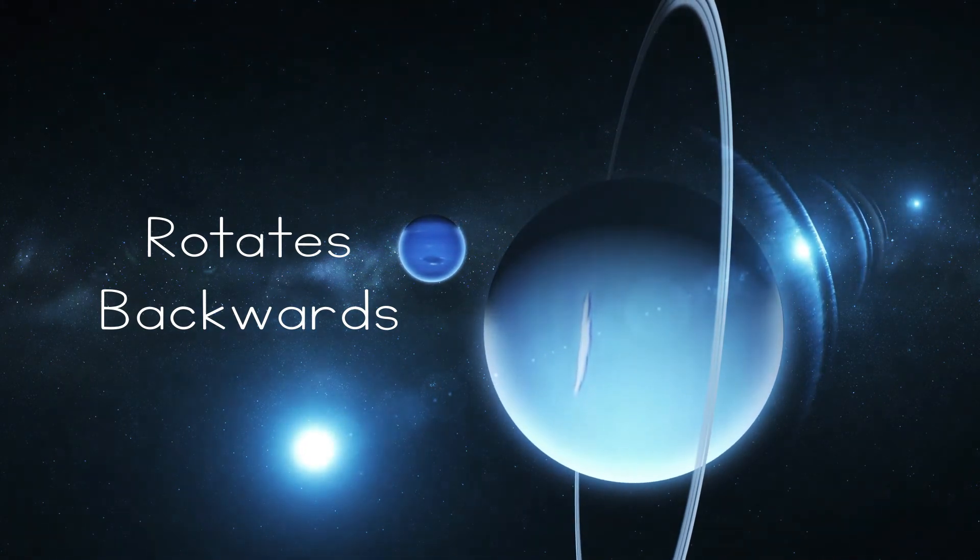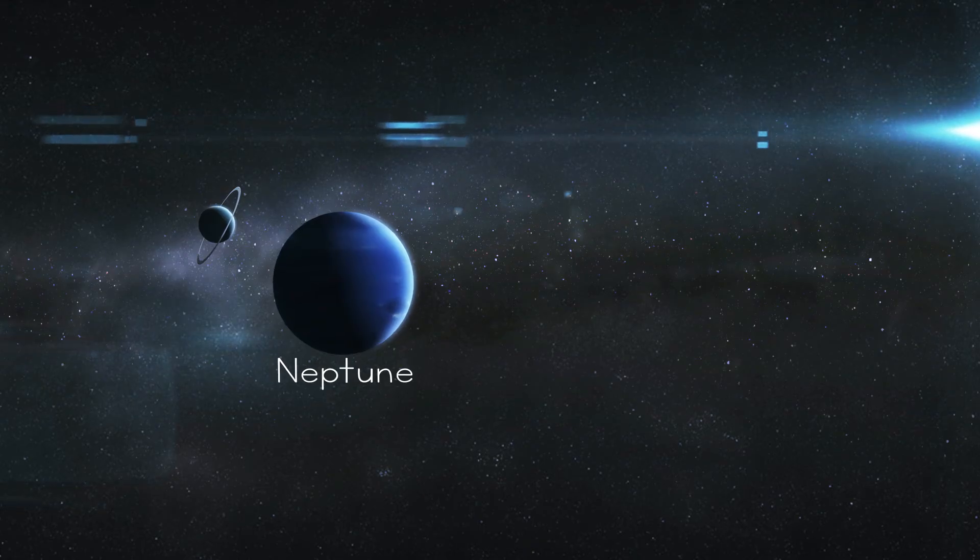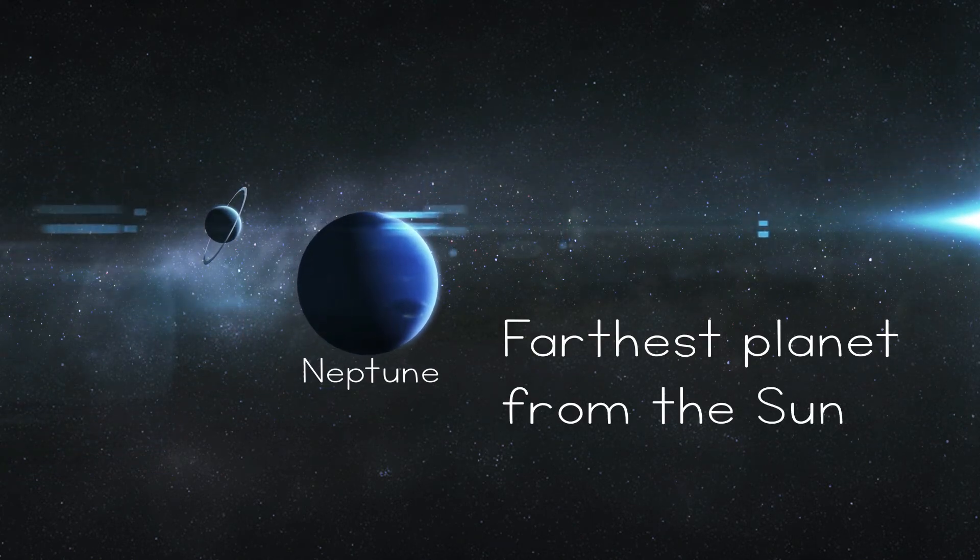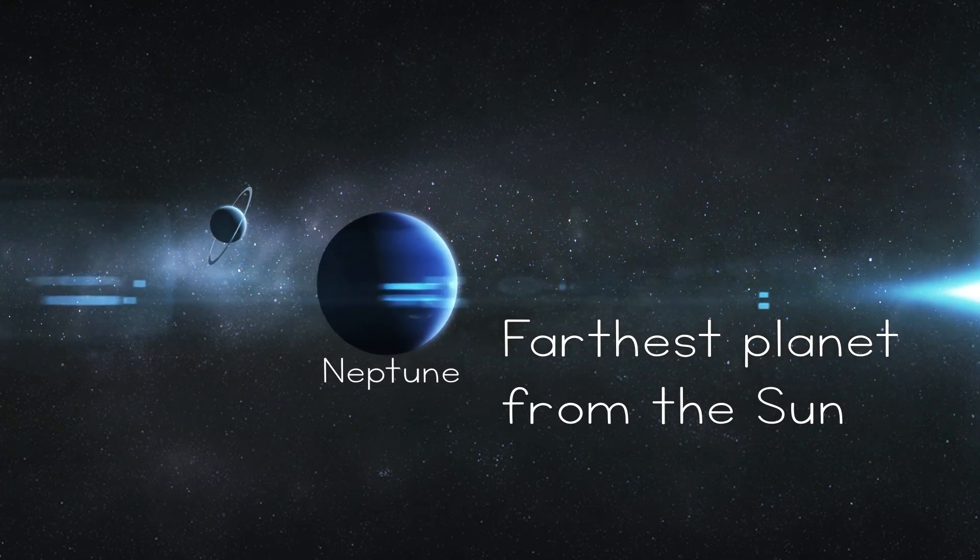If Uranus is the seventh planet from the sun, we only have one more to study. What do we know about Neptune? Neptune is the planet farthest from the sun in our solar system. It's the only planet that cannot be seen with the naked eye. It's a very dark, cold, and windy planet.